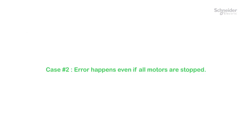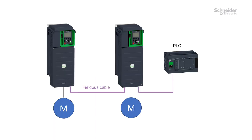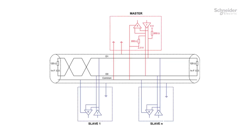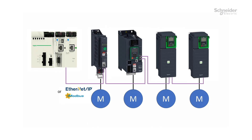Case number two: the error happens even if all motors are stopped. If the communication error is triggered even when your application is not running, follow these instructions. The first point to check is the line resistor for CANOPEN, PROFIBUS, Serial MODBUS, or BACnet. The second point is to check the timeout settings. If you are using Ethernet or Serial MODBUS, this timeout can be adjusted on the product side using the Graphic Display Terminal or SoMove.